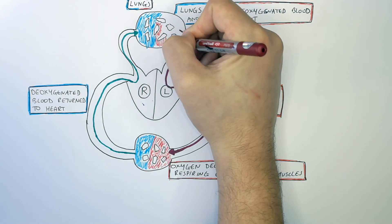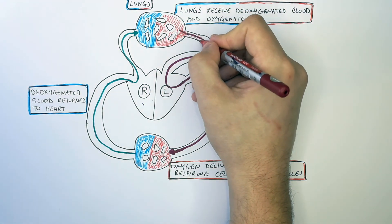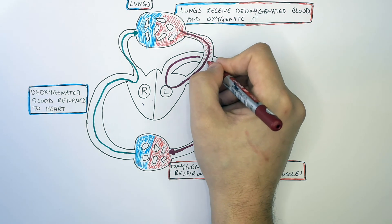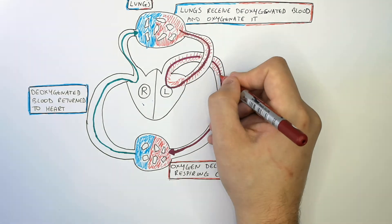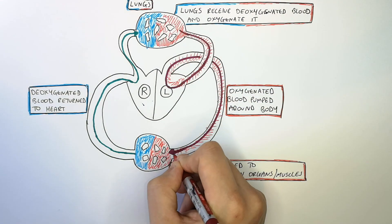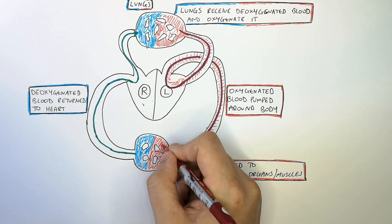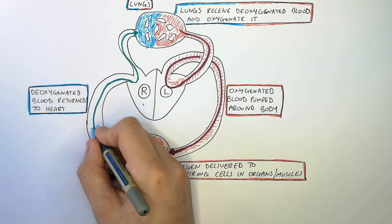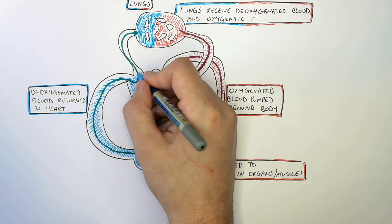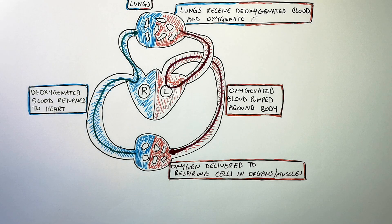Deoxygenated blood enters the lungs, and once it's oxygenated, oxygenated blood will leave the lungs and go back to the heart. Oxygenated blood is returned to the left side of the heart, and then the left side pumps oxygenated blood around the body. The respiring cells utilise the oxygen and glucose for respiration. The oxygenated blood is then returned back to the right side of the heart, which pumps the deoxygenated blood to the lungs to get oxygenated again. And that is the full cycle of the double circulatory system.